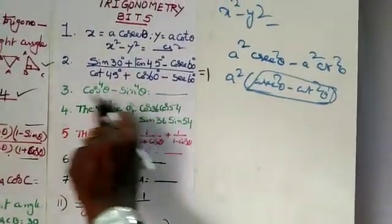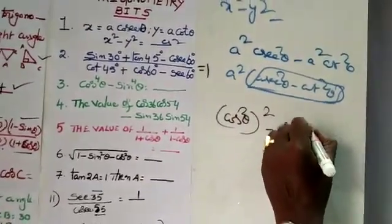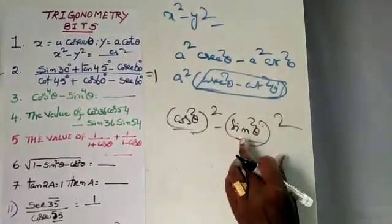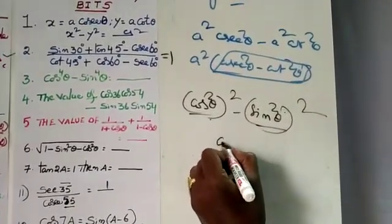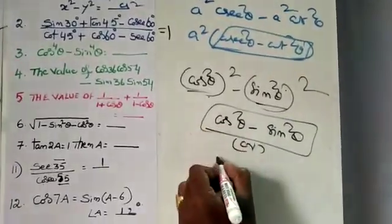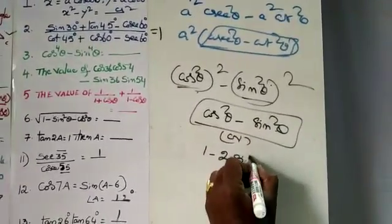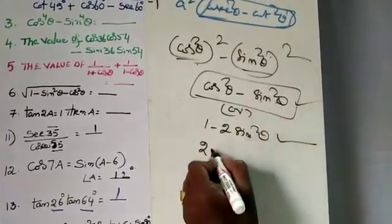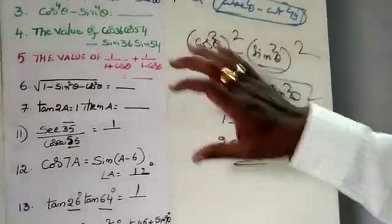Here, cos to the power 4th theta minus sin to the power 4th theta equals cos squared theta whole squared minus sin squared theta whole squared. Using a squared minus b squared equals (a plus b)(a minus b): one factor is cos squared theta plus sin squared theta, which is 1. So the answer becomes 1 minus 2 sin squared theta, which equals 2 cos squared theta minus 1.